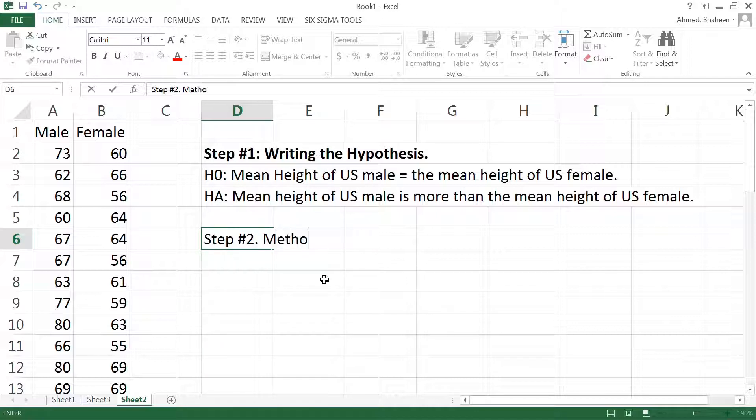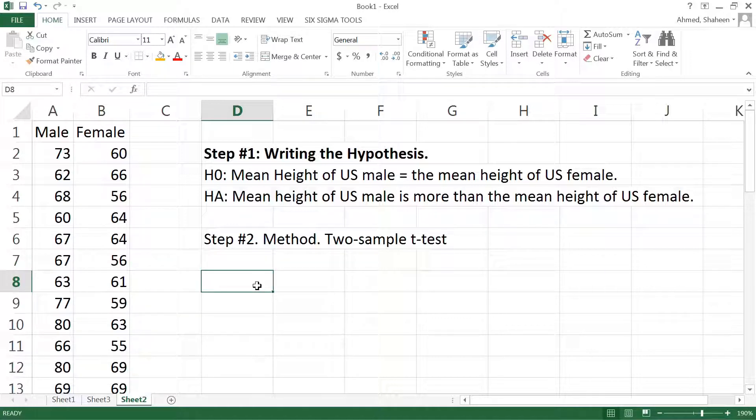Now method, Step Number Two, is the method. In this case we can run a two-sample t-test. Now it is not easy to determine which method is appropriate for what kind of test at this moment. However, as we go forward we will understand how to pick the appropriate method. So Excel can do the analysis for us. We can simply get the p-value from Excel.